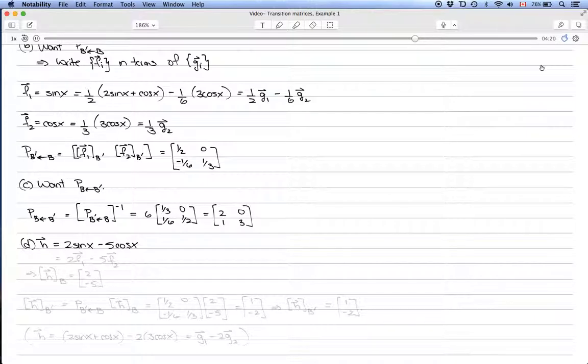Because h equals 2 times f_1 minus 5 times f_2, which means that the coordinate vector in terms of B is just [2, -5].